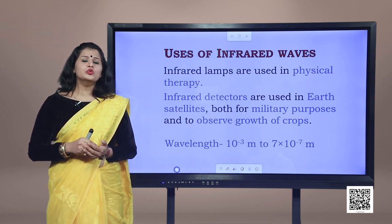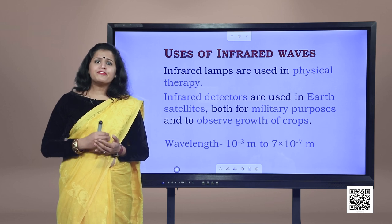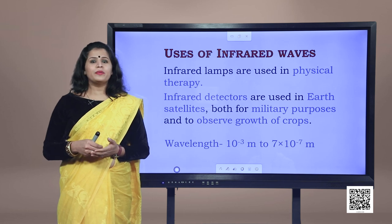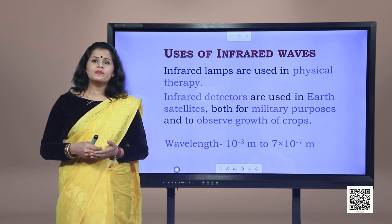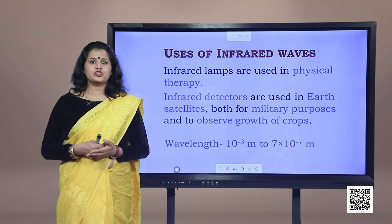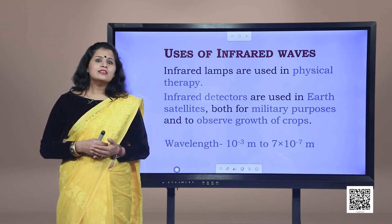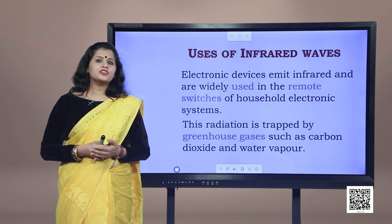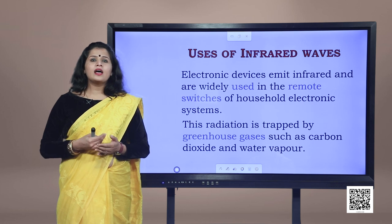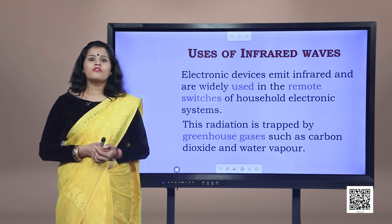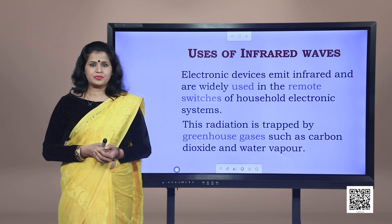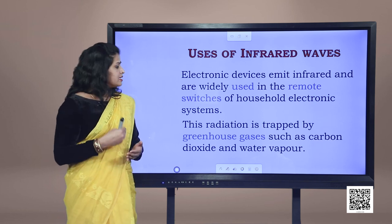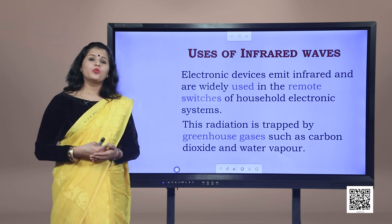Infrared lamps are used in physical therapy. Infrared detectors are used in Earth satellites for both military purposes and to observe the growth of crops in agriculture. Electronic devices emit infrared waves and are widely used in the remote switches of household electronic systems. This radiation is trapped by greenhouse gases such as carbon dioxide and water vapor.